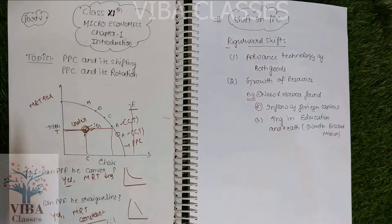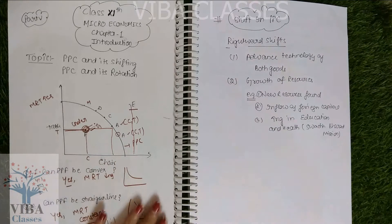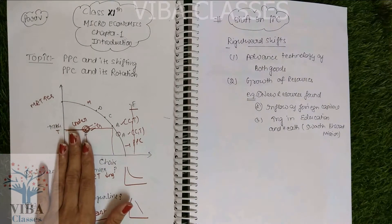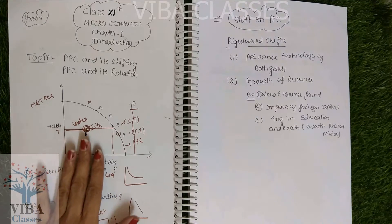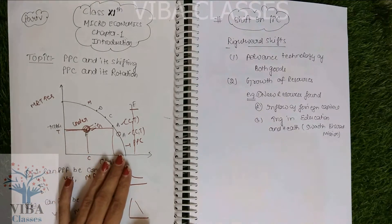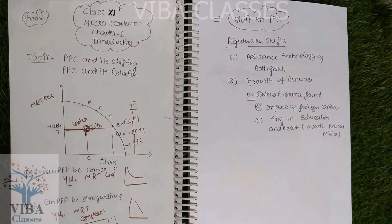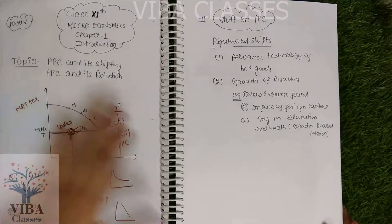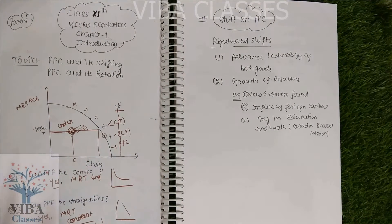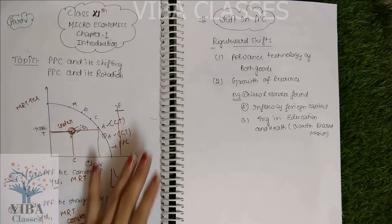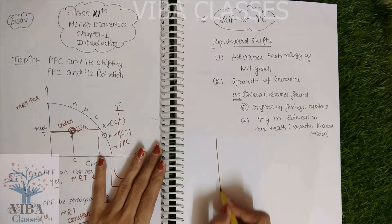So generally if asked, PPC is concave in shape. You now have all the information about PPC — what PPC means, its features, its shape, which points are attainable and which are unattainable. Now we talk about the main topic of this video specifically: what is shift in PPC, and shift has two categories — rightward shift and leftward shift.